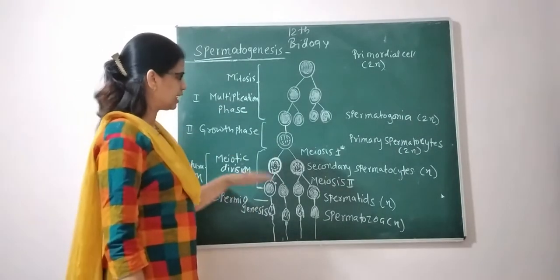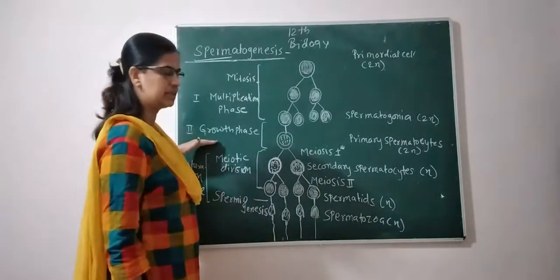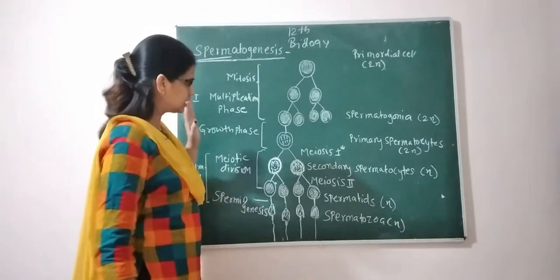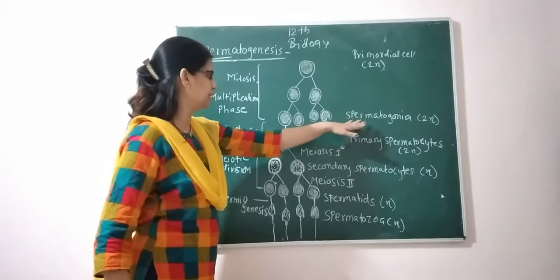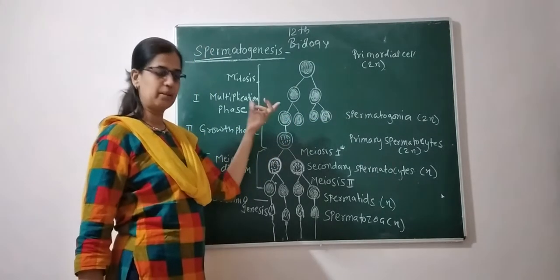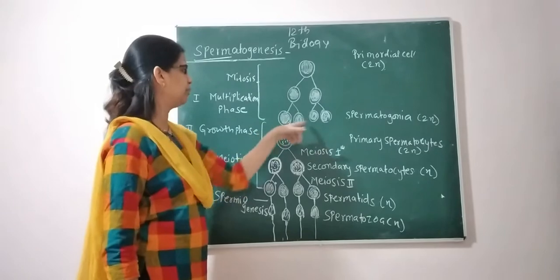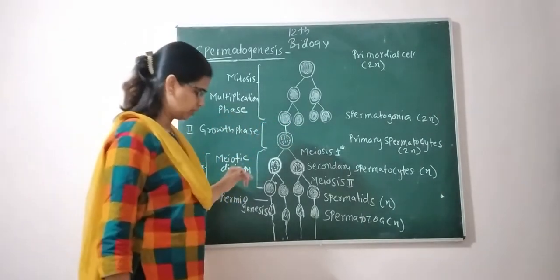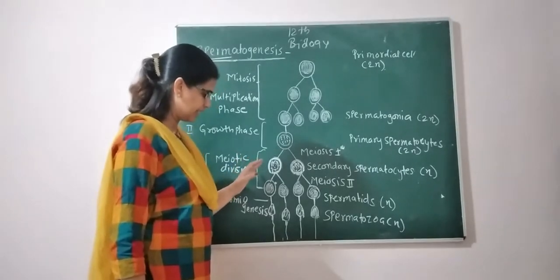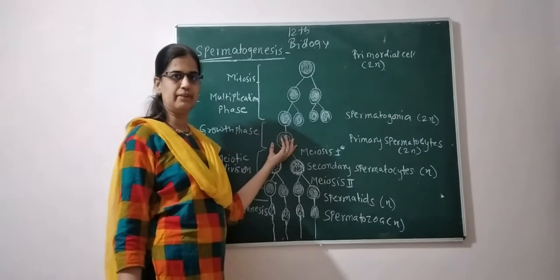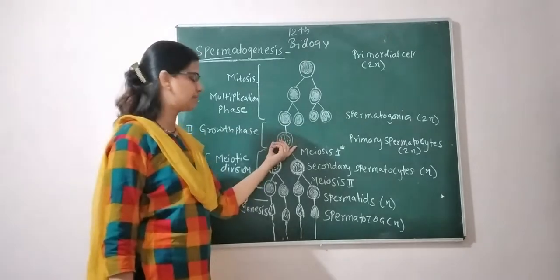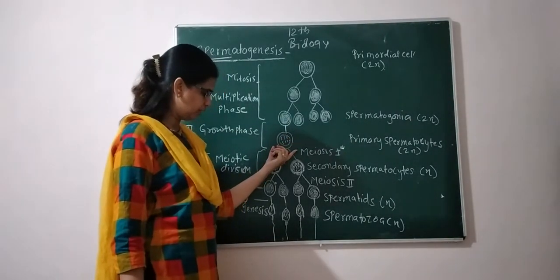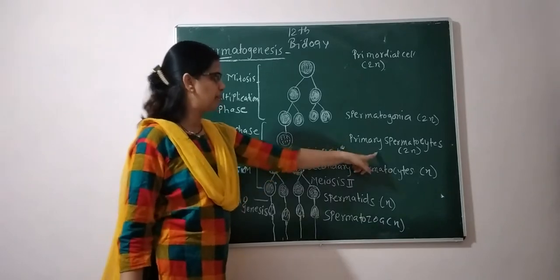In the growth phase, what exactly occurs is that the spermatogonia stop dividing and grow in size. Division stops, size increases, and the cells grow to develop into primary spermatocytes.